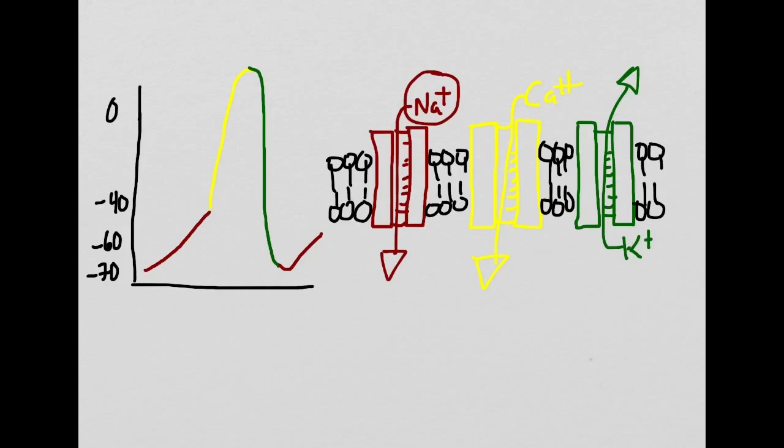It is the slow leaking of the sodium channels that allows the heart to have an automatic heartbeat.